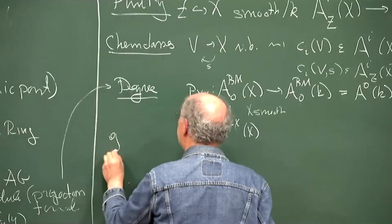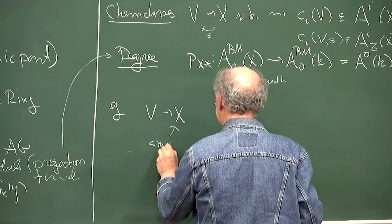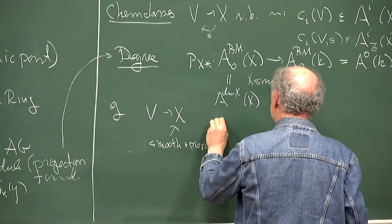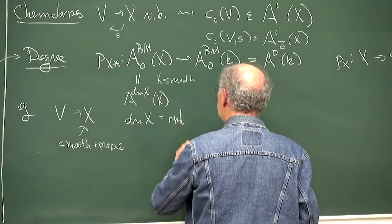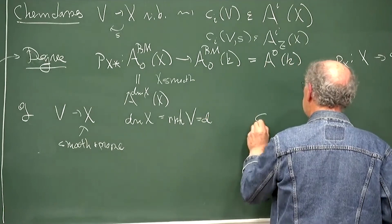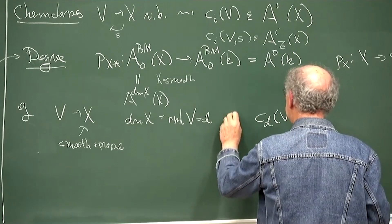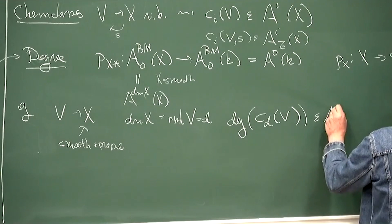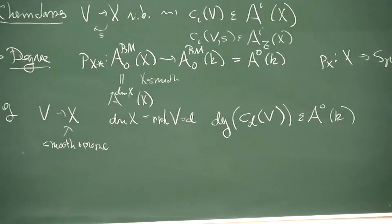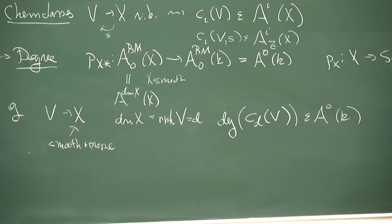For example, putting these two things together: if you have V on X where X is smooth and proper, and the dimension of X equals the rank of V — call that D — then you can take the top Chern class of V, also known as the Euler class, take its degree, and get something in A^0 of K. For the Chow groups, this is just Z, and that's how you count things with the degree map.